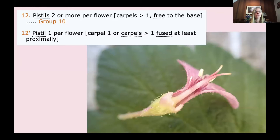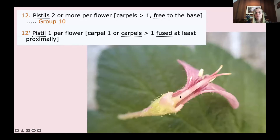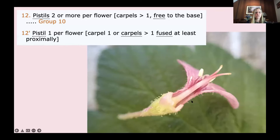Next: pistils two or more per flower, carpels more than one free to the base, or pistil one per flower, carpel one or carpels more than one fused at least proximally. In this case, we can see it looks like we have one pistil. Looking here, we have the ovary, the style, the stigmas — so that is one pistil. It may be more than one carpel, but it is one pistil.